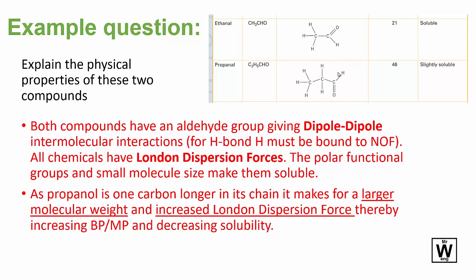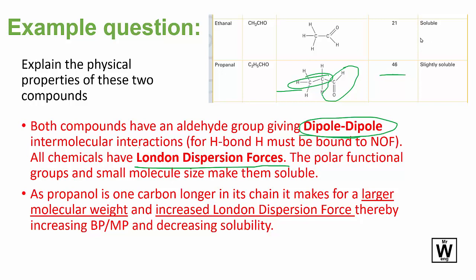Here's an example question. They're both aldehydes with the same functional group, so hydrogen bonding to carbon, oxygen, and nitrogen is not relevant. The only difference is chain length, so we mention London dispersion forces. Depending on the marks available, we'd also mention that both have dipole-dipole — so that's equal — but because propanal has a longer chain, it will have a higher melting and boiling point.